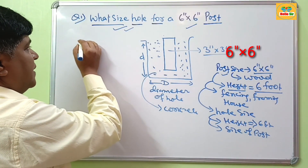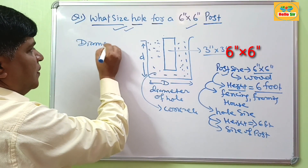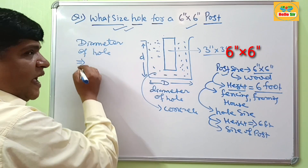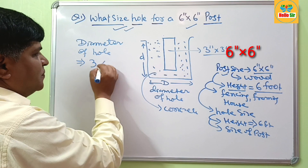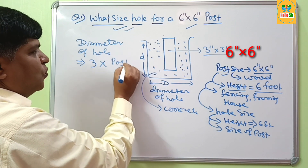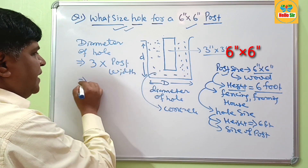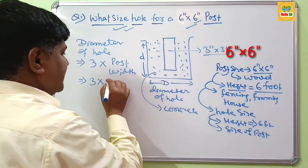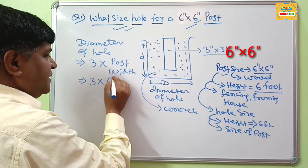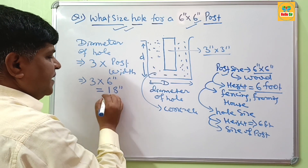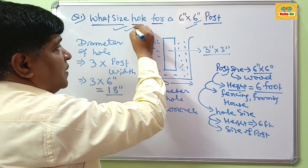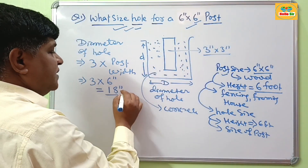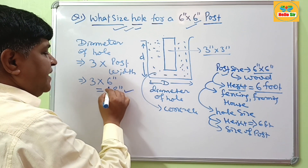Now find the diameter of this hole. The diameter of the hole, as per the thumb rule, is 3 times the post width. The post width is 6 inches, so 3 multiplied by 6 inches gives 18 inches. The diameter of the hole required for setting a 6 inch by 6 inch post should be 18 inches.